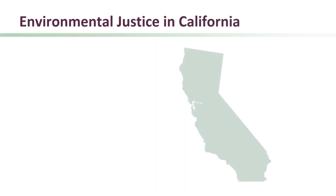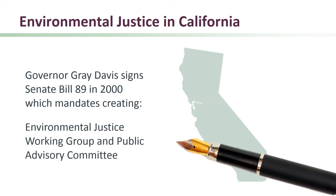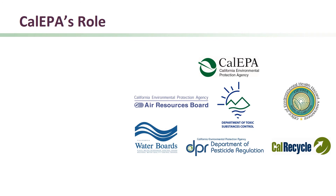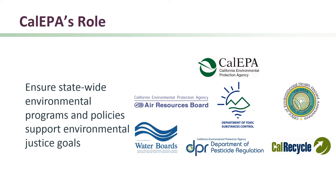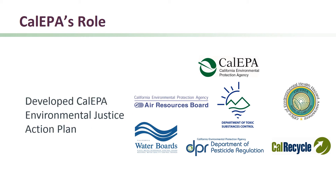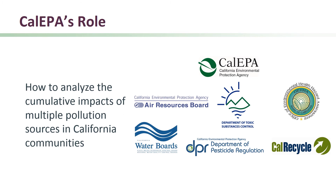The state of California was one of the first to implement environmental justice into its laws. In 2000, Governor Gray Davis signed Senate Bill 89, requiring the creation of an environmental justice working group and public advisory committee. These groups were tasked with helping CalEPA create an interagency environmental justice strategy. CalEPA and the departments that make up the agency are responsible for making sure that state environmental programs and policies support environmental justice goals. CalEPA is responsible for identifying and addressing gaps in existing programs, policies, or activities which may hinder environmental justice in the state. With the development of CalEPA's Environmental Justice Action Plan, the state was asked to develop guidance on how to analyze the cumulative impacts of multiple pollution sources in California communities.